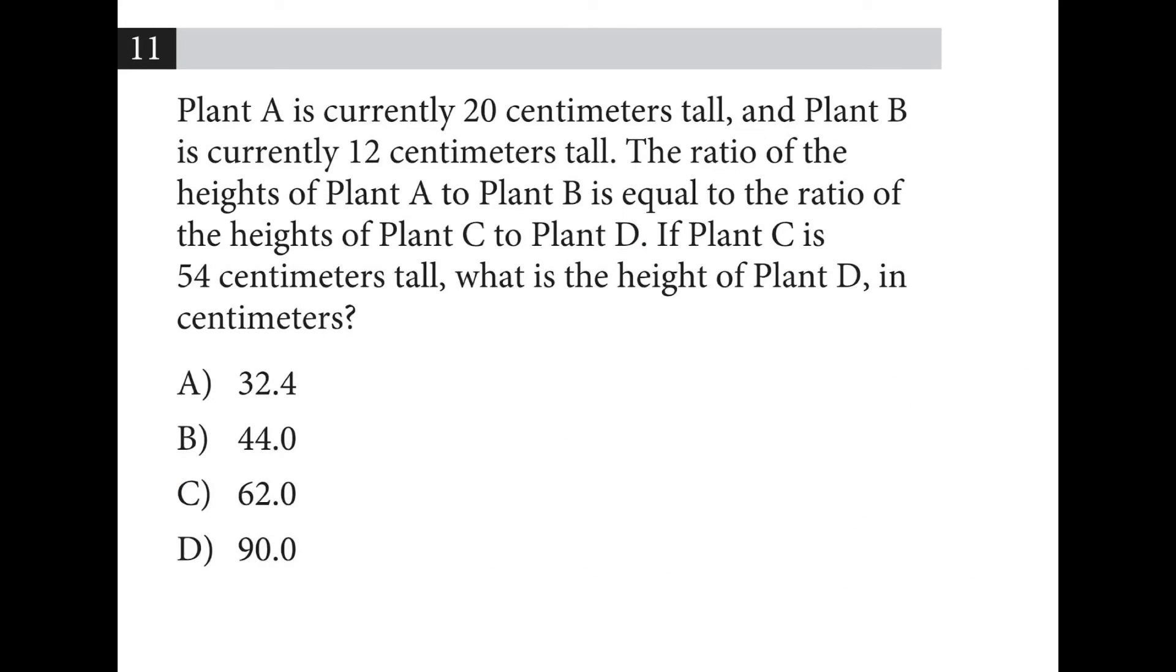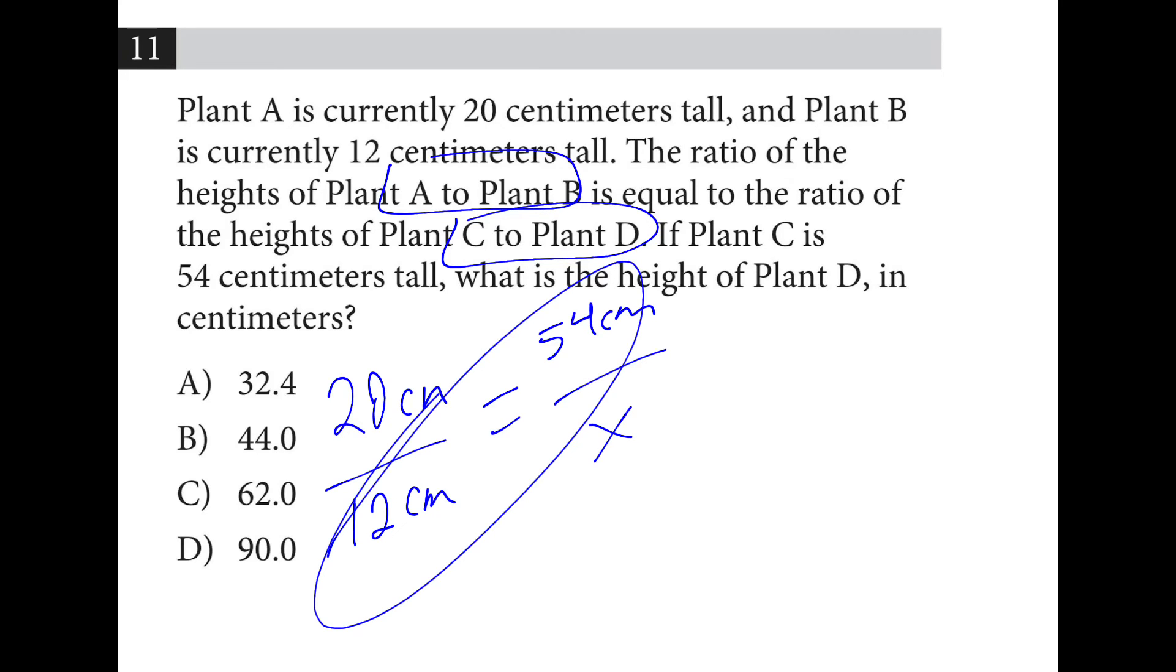Plant A, 20 centimeters. Plant B, 12 centimeters. The ratio of these heights is equal to the ratio of these heights: 54 centimeters to x. So you cross multiply 54 times 12, and you divide by 20, which is 32.4.